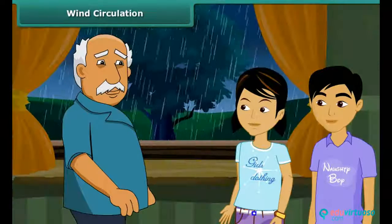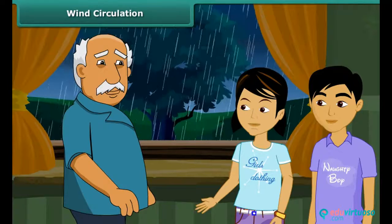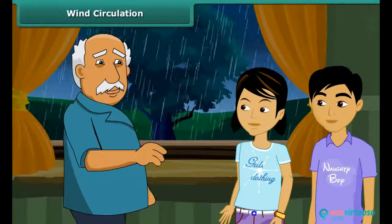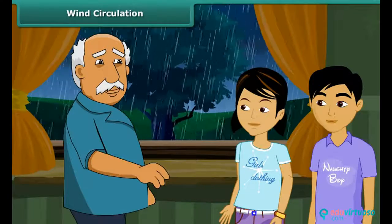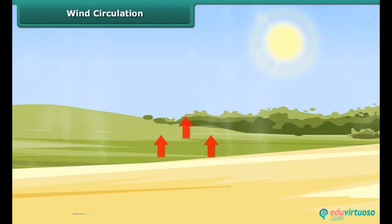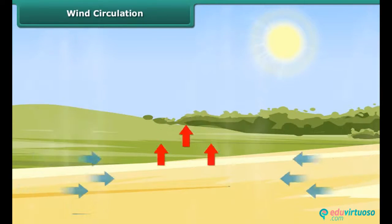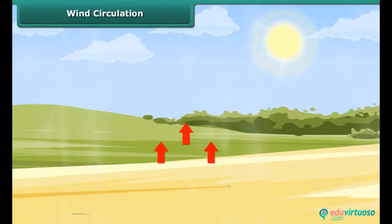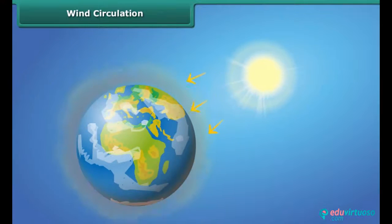Radhika asks: how does wind circulate on the earth? Grandpa explains: warm air is light, so it rises up at a place, and as a result the air pressure of that area gets lowered. The cold air from the surrounding areas rushes in to fill its space. Energy from the sun heats the earth's surface.